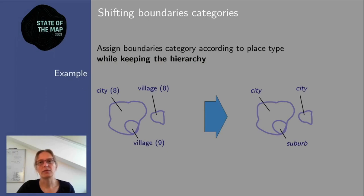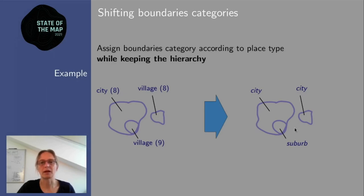Once boundaries and place nodes are matched, Nominatim shifts address categories according to place designation while keeping the hierarchy established by admin levels. For example, if two villages exist — one independent at admin level 8, one dependent at admin level 9 inside a city at admin level 8 — both villages would nominally shift to city-level by place designation. But since the dependent village would then be at the same level as the boundary it's inside, it stays at level 9, becoming a suburb. This gives exactly the right result: the dependent village is a suburb, the independent one remains a city-level place.